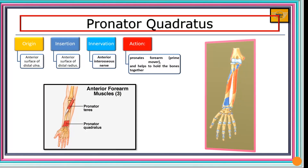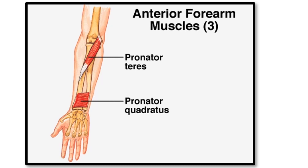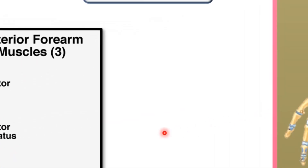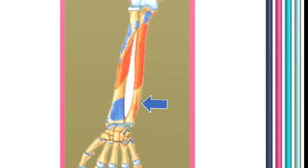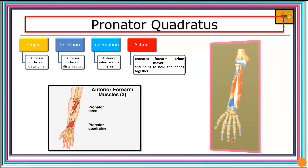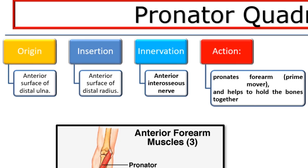Now we look at pronator quadratus. It takes origin from the anterior surface of the distal part of the ulna. Its insertion is on the distal one-quarter of the anterior surface of the radius. The nerve supply is the anterior interosseous nerve, and its action is pronation — it is the prime mover of pronation. It also helps to hold the radius and ulna together.